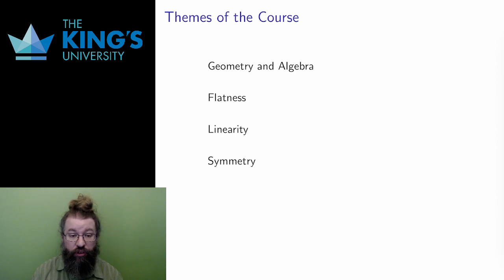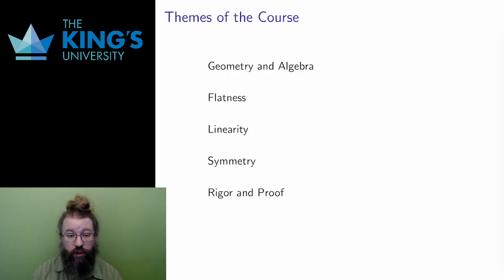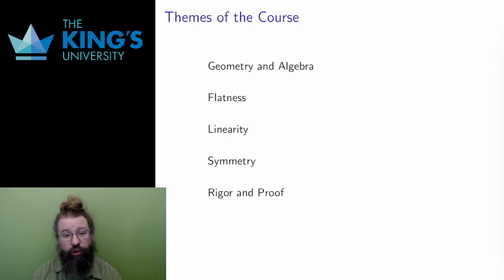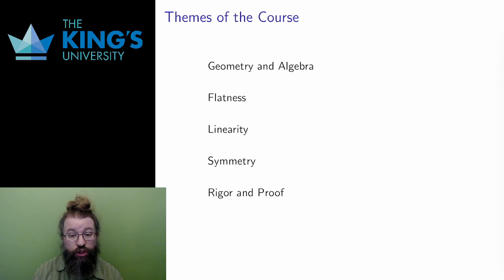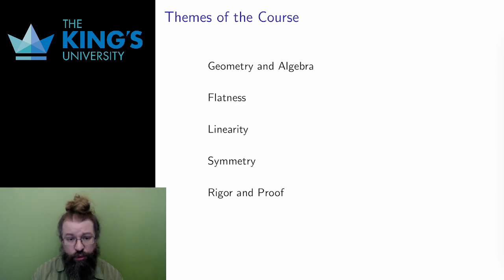The fifth theme is definition, rigor, and proof. Mathematics is a formal language with strict rules about logic, definition, and arguments. Your mathematical education to date has included this formalization, but this course represents a substantial step up in commitment to that formalization. All the definitions in this course will be given in mathematically formal language. I will try to provide proofs for many of the statements, and I'll also ask you to try and write proofs in your exercises and assignments. I'll try to convince you that writing proofs, alongside doing calculations or solving problems, is doing mathematics.